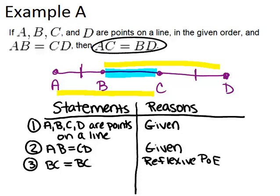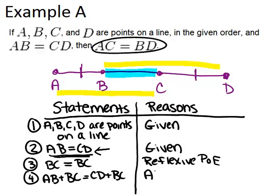Now at this point, I could add BC to both sides of this equation in order to end up creating the two segments that I want, AC and BD. So if I do that, I get AB plus BC equals CD plus BC. I took this equation and added BC to both sides, which I'm allowed to do by the addition property of equality. You're allowed to add the same thing to both sides and it doesn't change the equality of an equation.